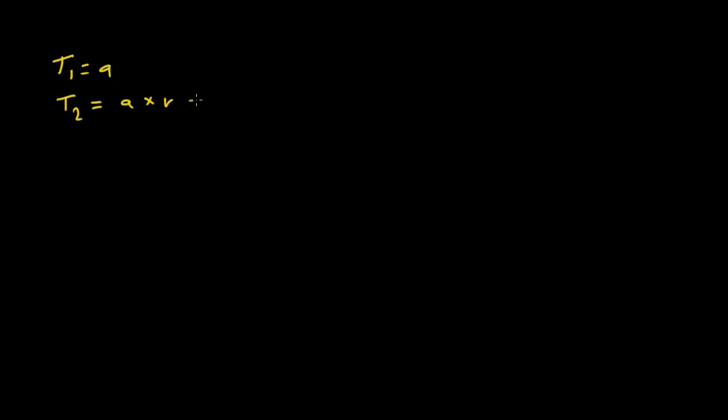Now let's consider finding the nth term. If a question asks you to find, say, the 18th term, what is the formula and how do you derive it? We know T1 equals A. The first term times the ratio gives the second term, so T2 equals A times R, which is AR. Moving to the third term, T3 equals AR times R, which gives AR squared.